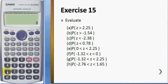And you press shift 1 7 to call this one. So for the first question, it's R, number 3, 2.25, and the answer is 0.0122. So the probability for z greater than 2.25 is 0.0122.